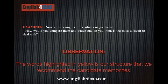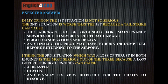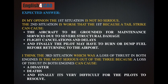Observation: the words highlighted in yellow are a structure we recommend the candidate memorises. Model answer: 'In my opinion, the first situation is not so serious. The second situation is worse than the first because a tail strike can cause the aircraft to be grounded for maintenance services due to severe structural damage, flight cancellations and delays, and finally the pilot may have to burn or dump fuel before returning to the airport. I think the third situation, which was a loss of thrust in both engines, is the most serious out of the three because a loss of thrust in both engines can cause a disaster, deaths, and finally it's very difficult for the pilots to resolve.'